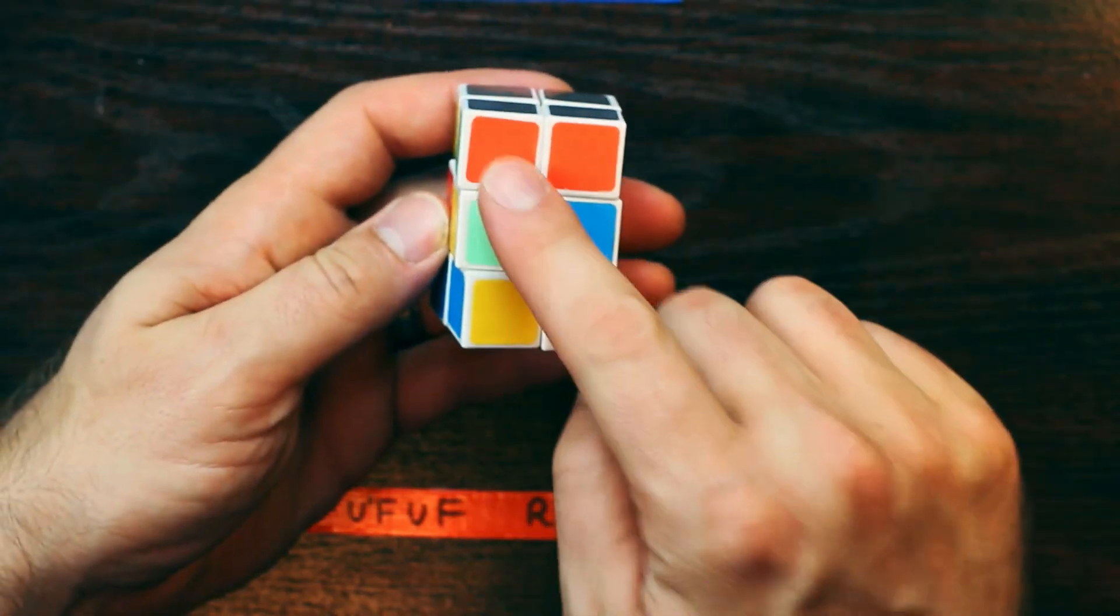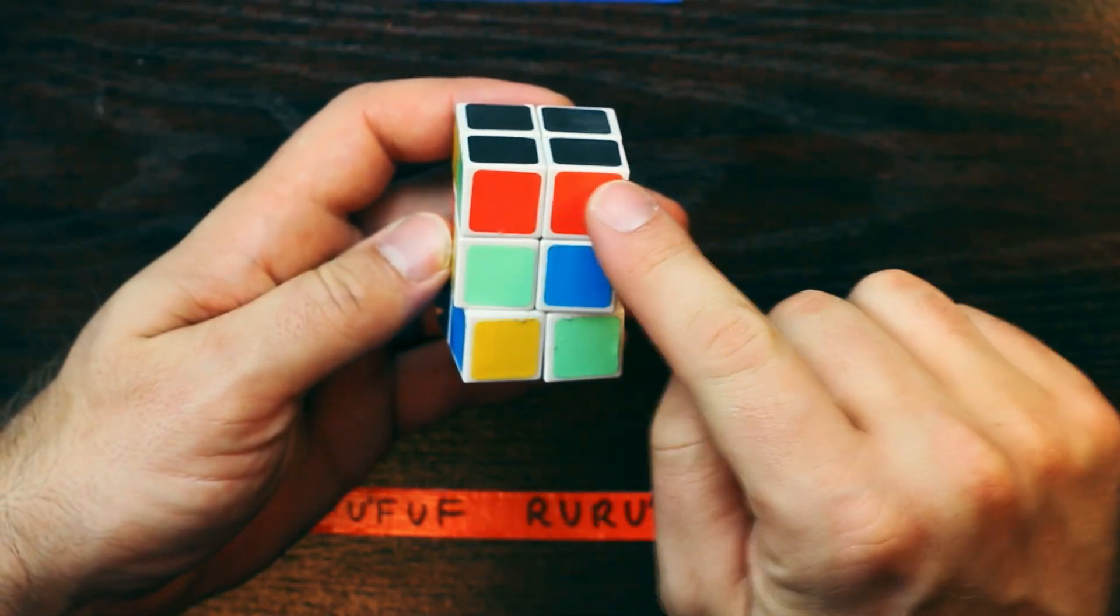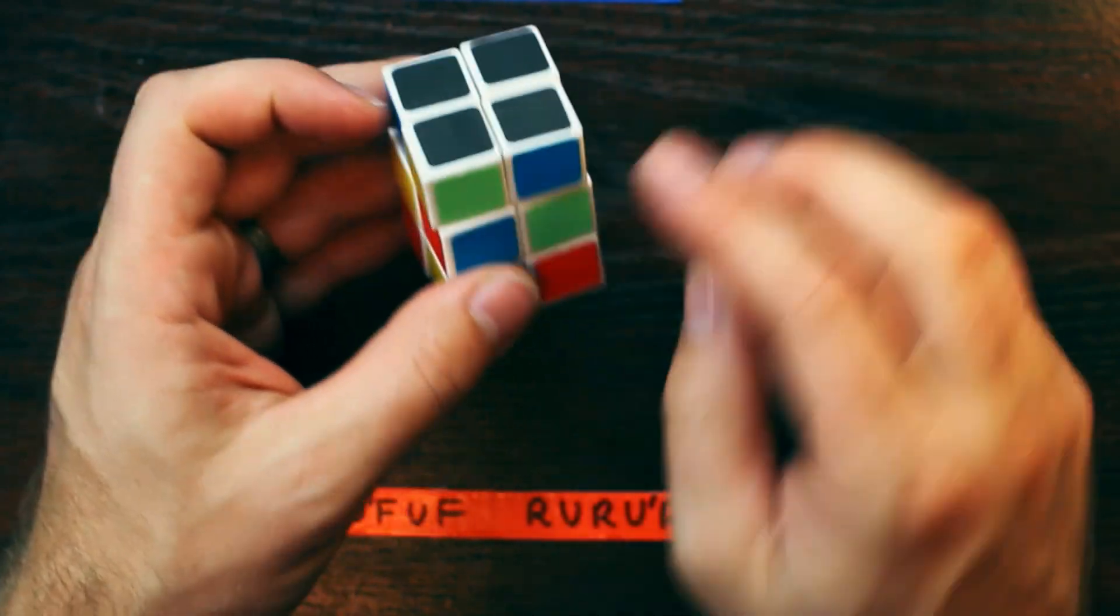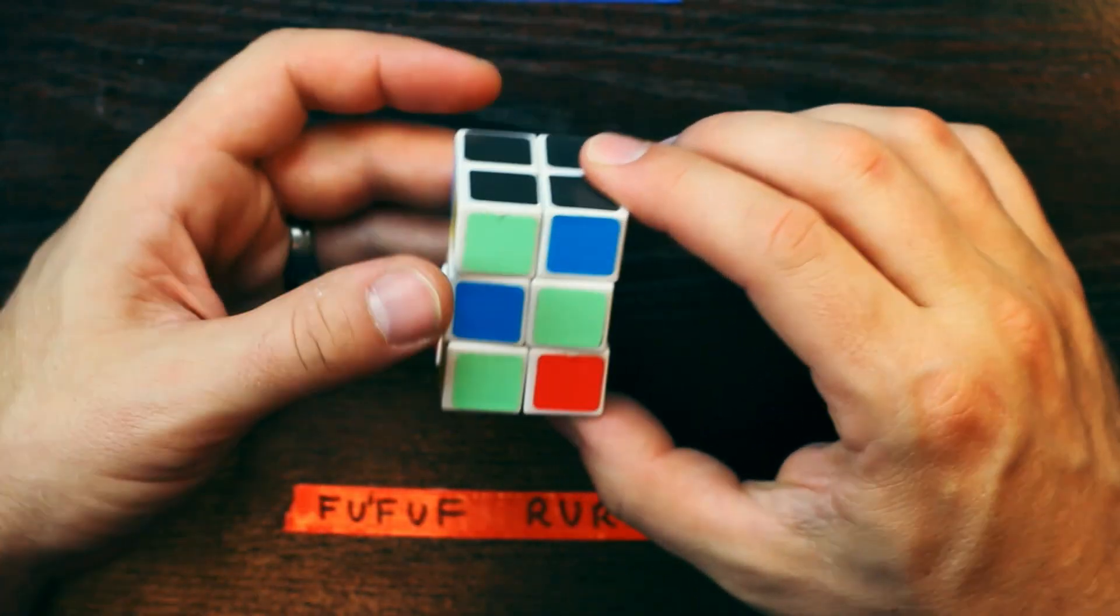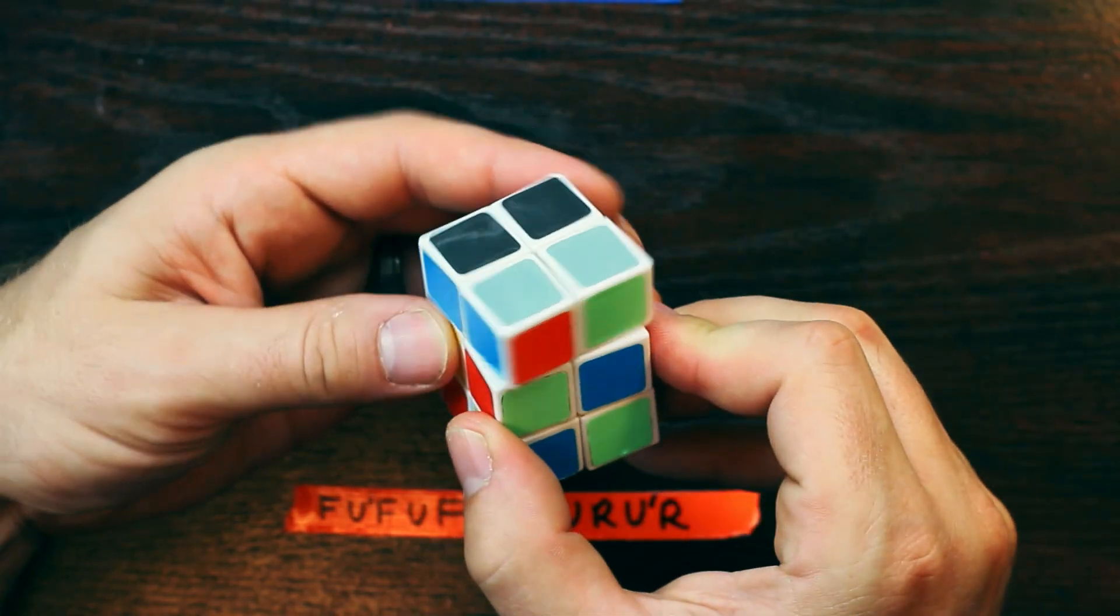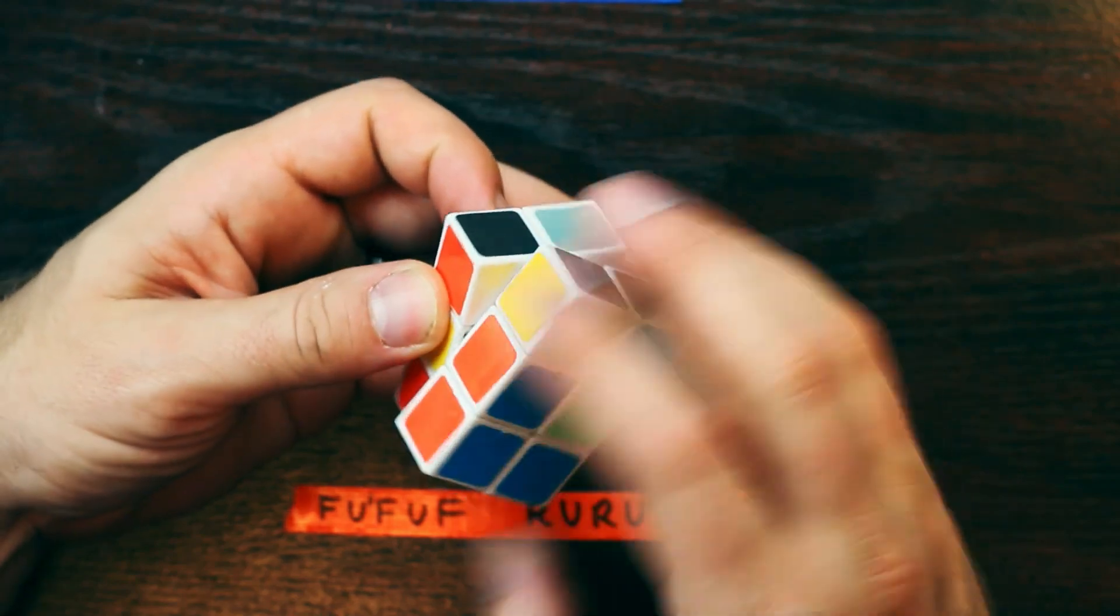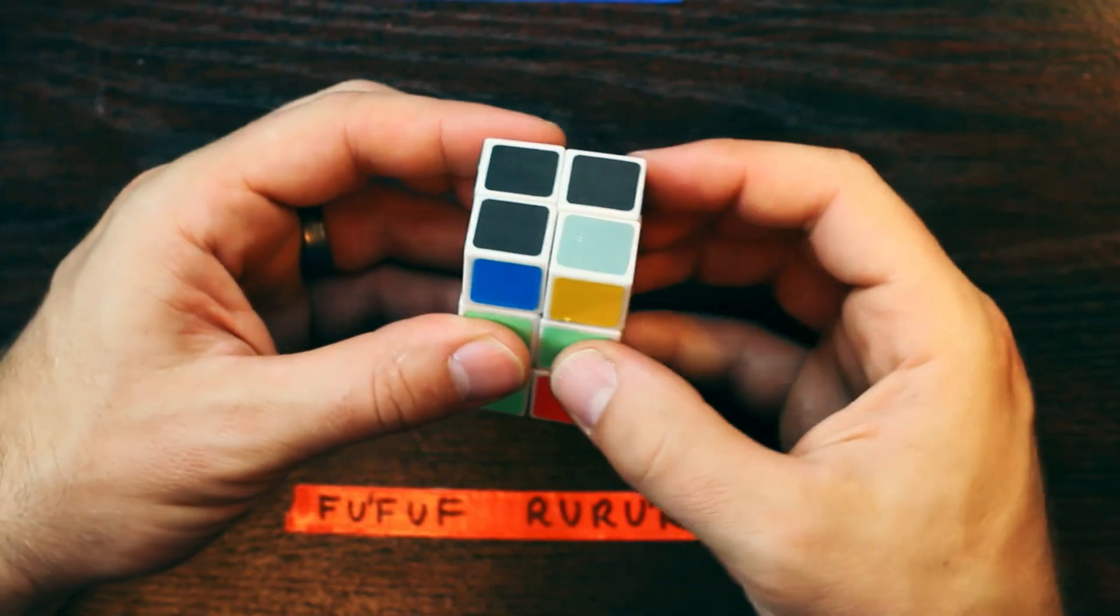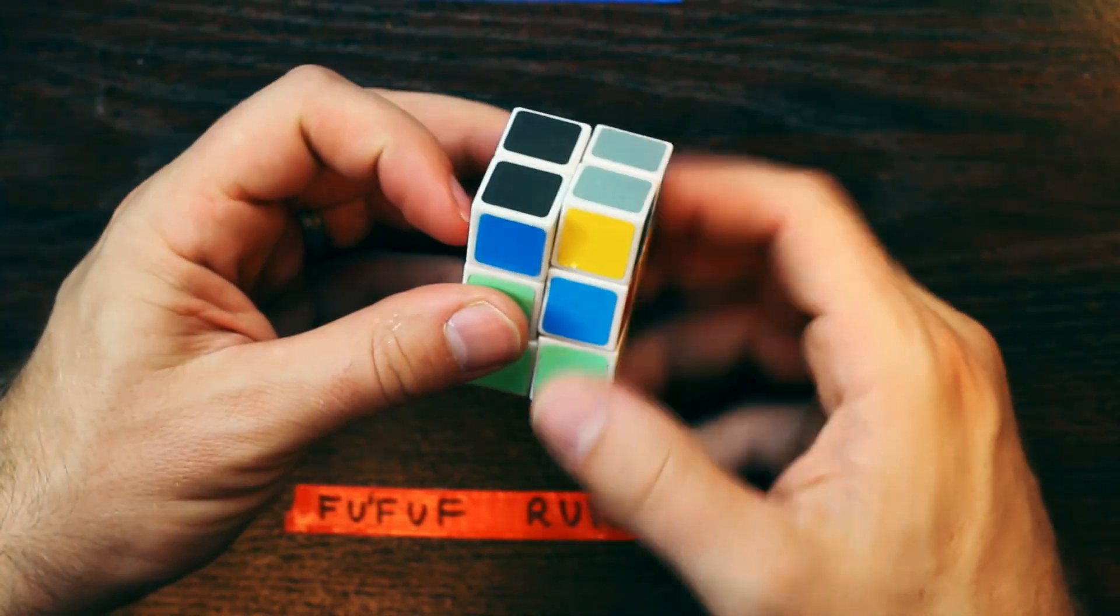Now I just look for are there any two equal next to each other? These two are the same, so two reds. These two are backwards. So now I do my move. Front up front up front. Front up, front up front. And then right up right up right. Now I've solved that layer.